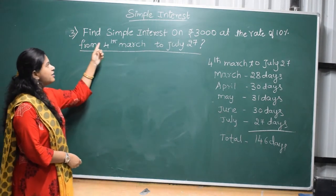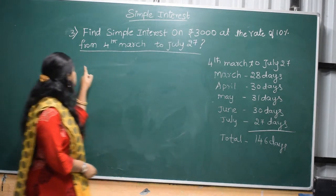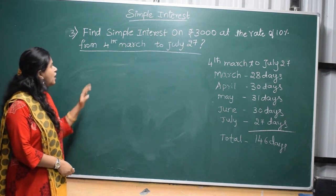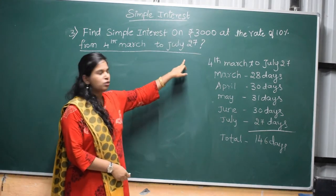The third question is: find Simple Interest on Rs. 3000 at the rate of 10% from 4th March to July 27. First, we have to calculate how many days are there from 4th March to July 27.